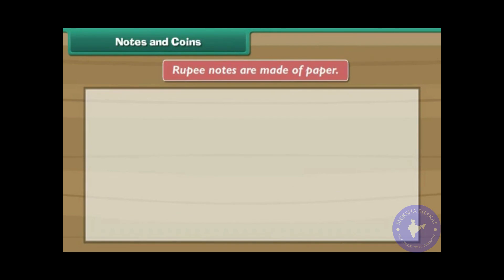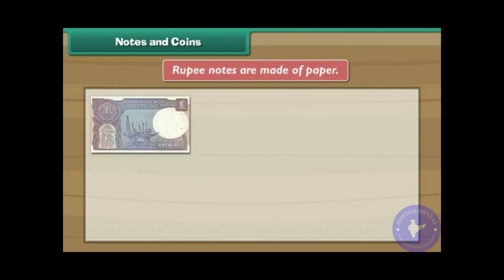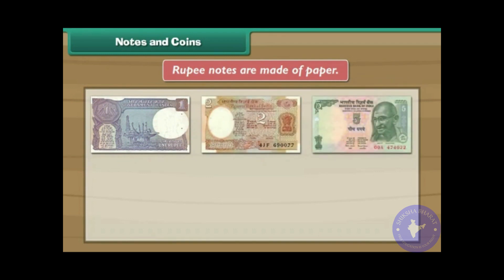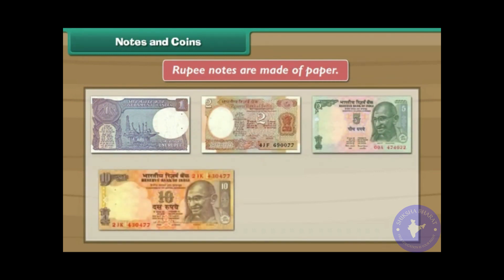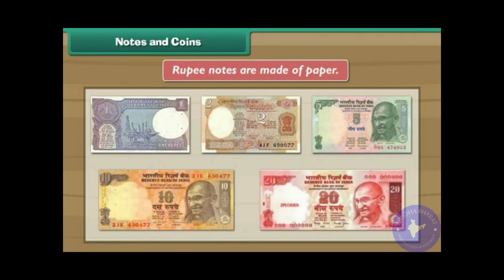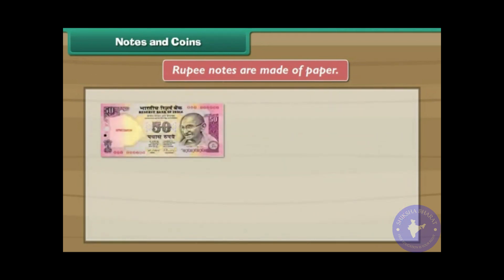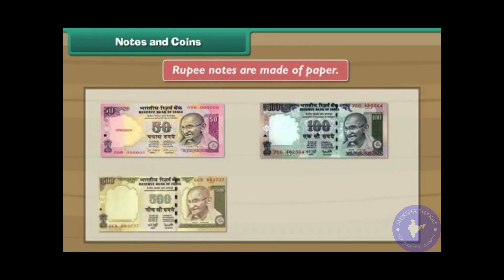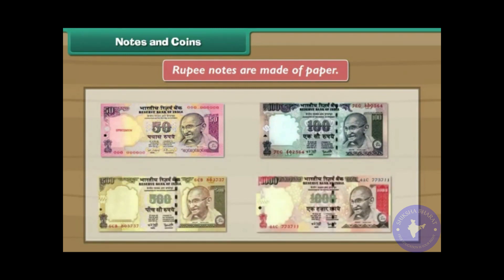Rupee notes are made of paper. There are 1, 2, 5, 10, 20, 50, and 100 rupee notes.